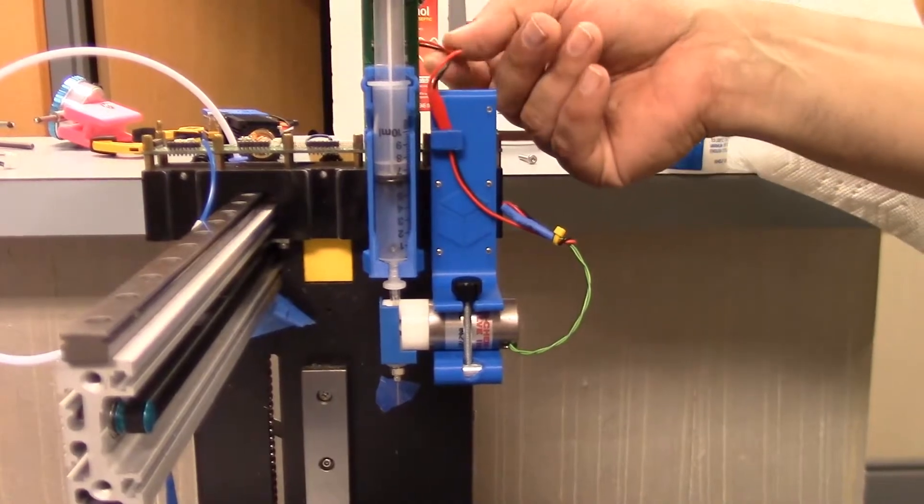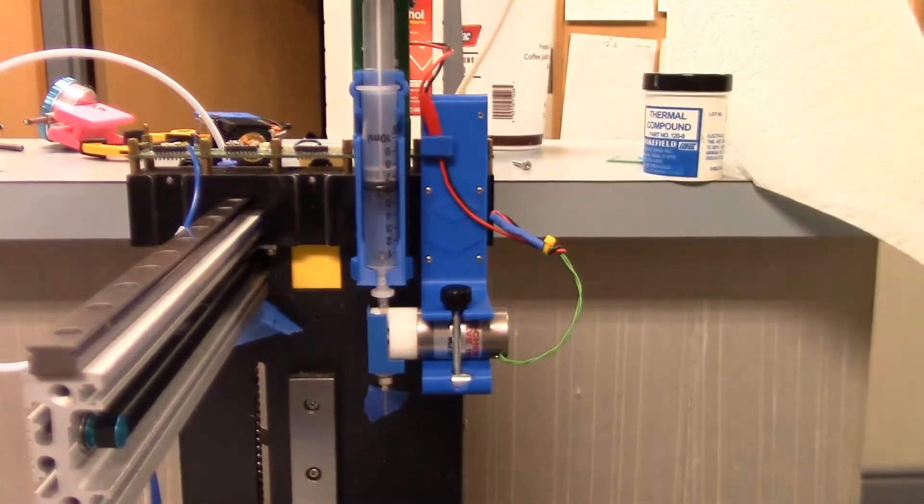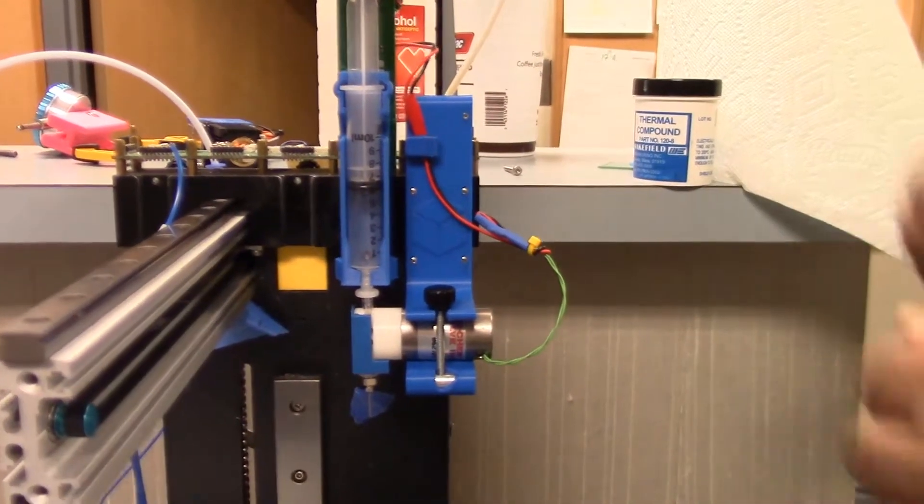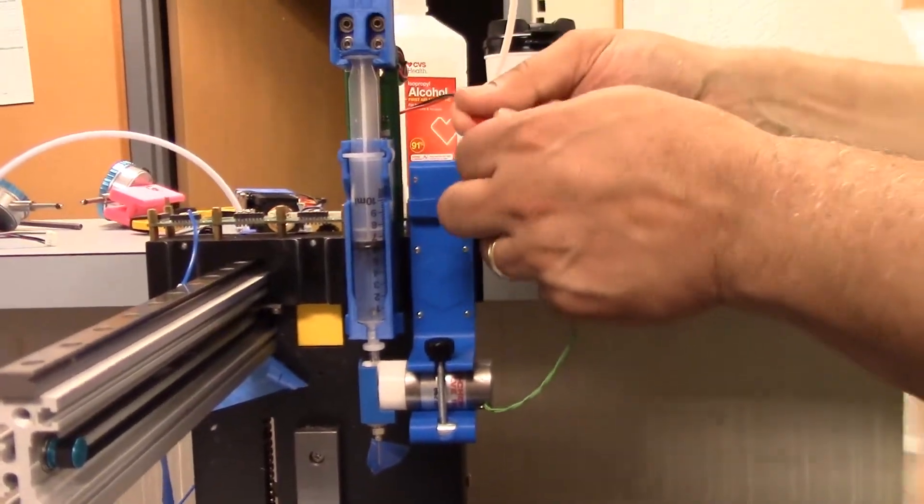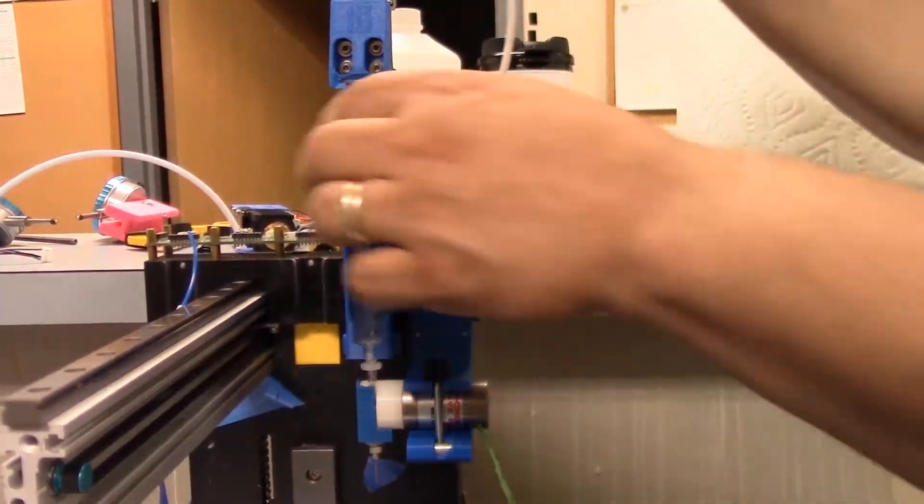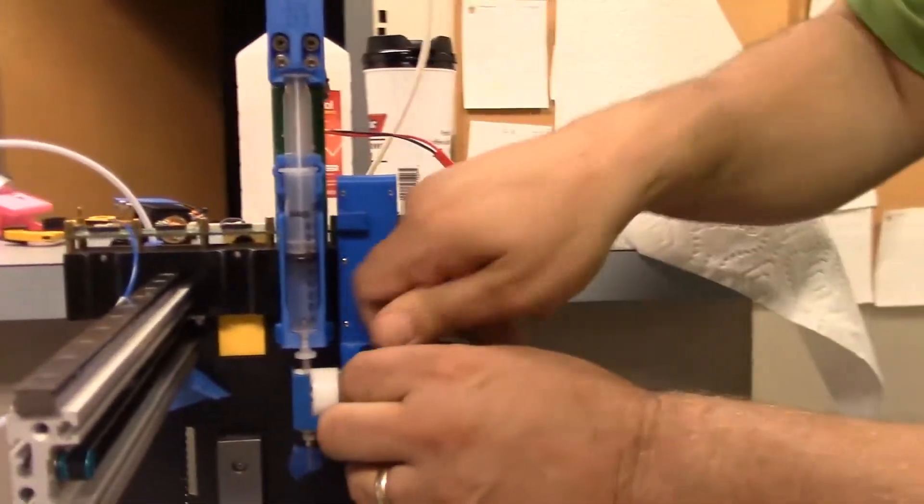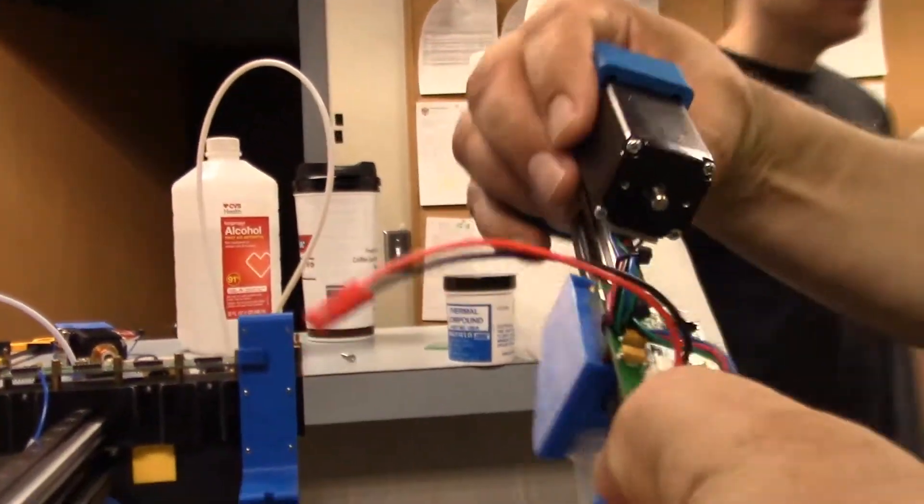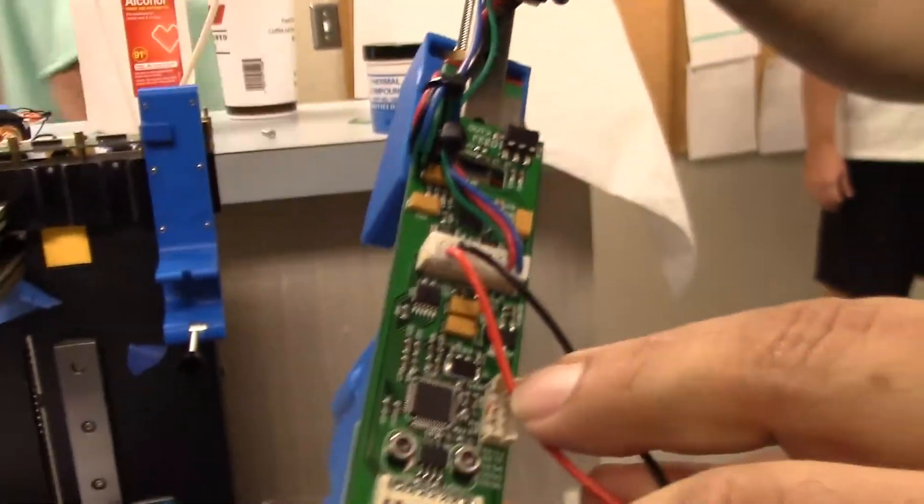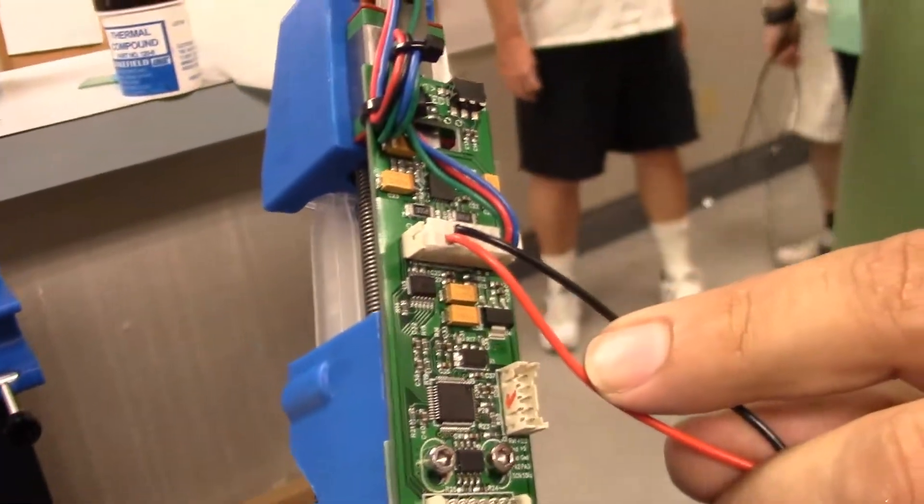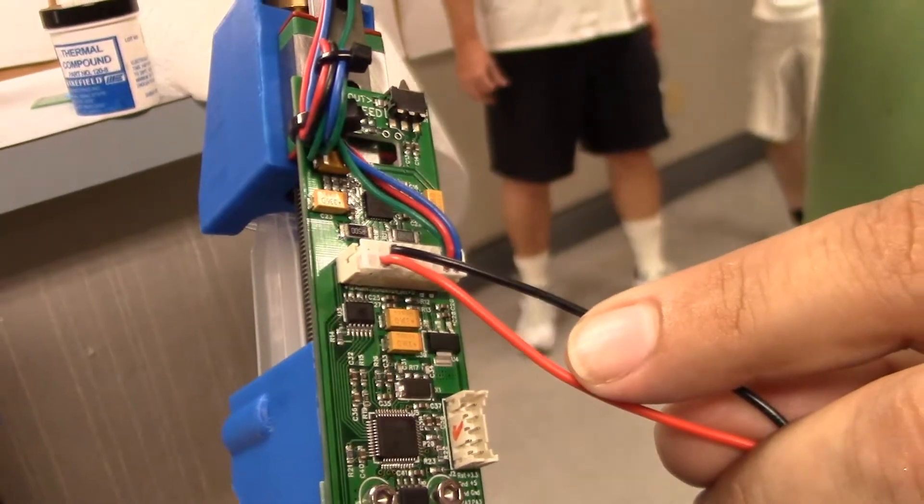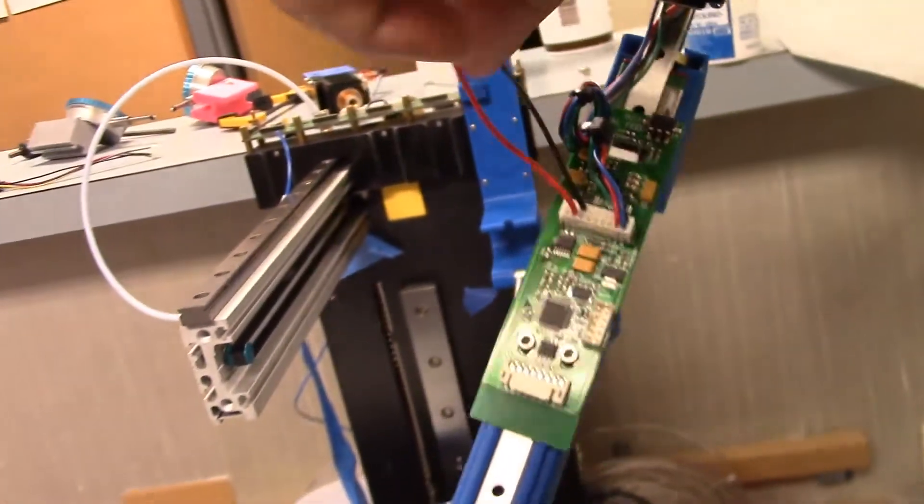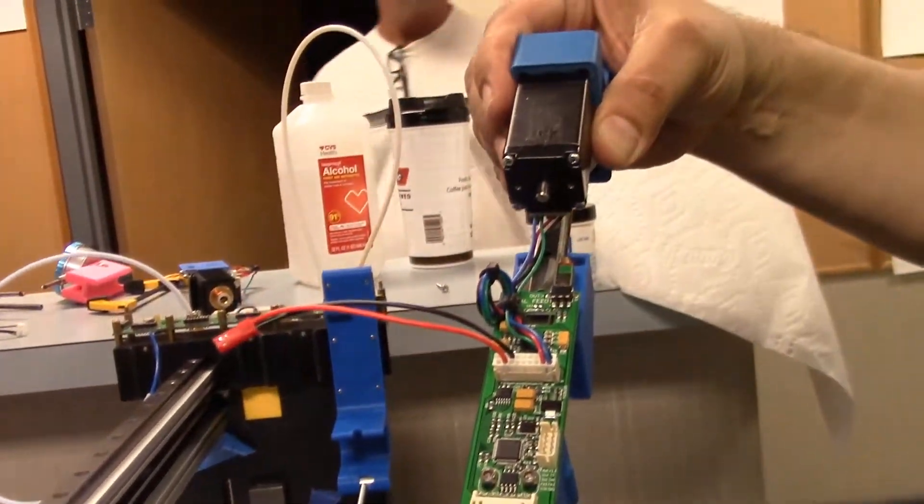Next we're going to take a look at where these wires have to be connected to the head. Disconnect this. We can bring this out and show you. That's where these wires go.